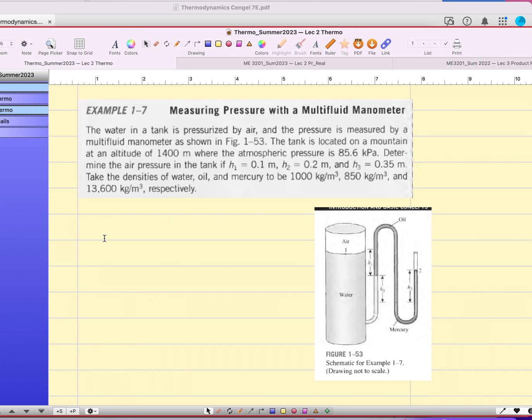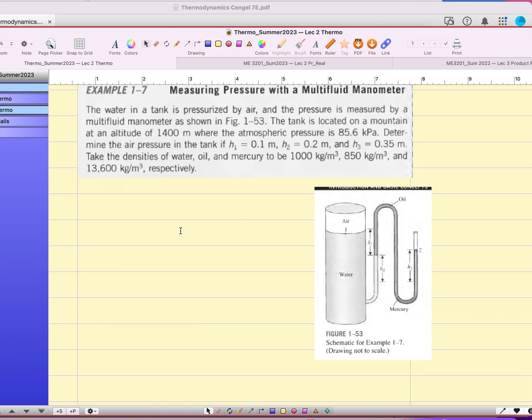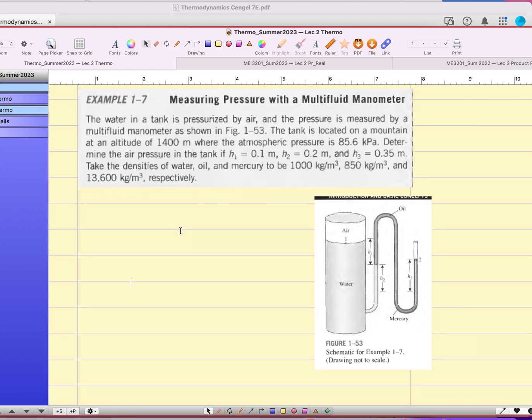So water tank, and what is in the tank is pressurized by air and the pressure is measured by a multifluid manometer as shown in Figure 1-53. The tank is located on a mountain at the altitude of 1400 meters where the atmospheric pressure is 85.6 kPa.